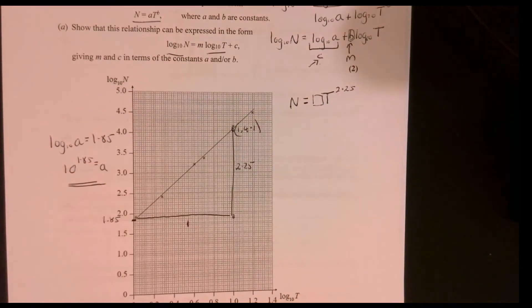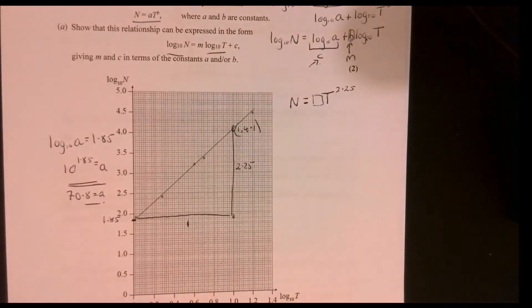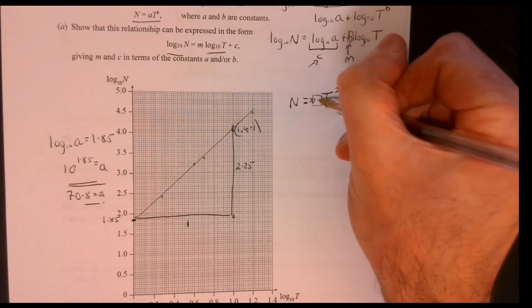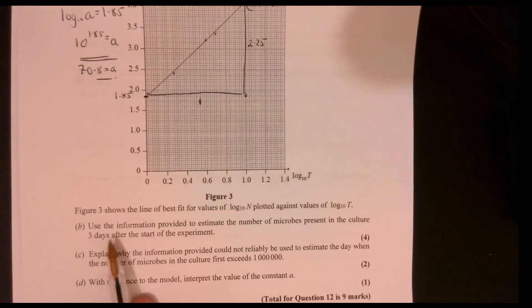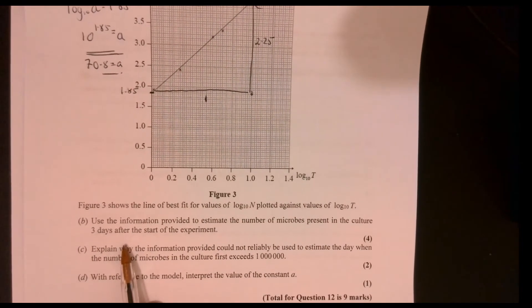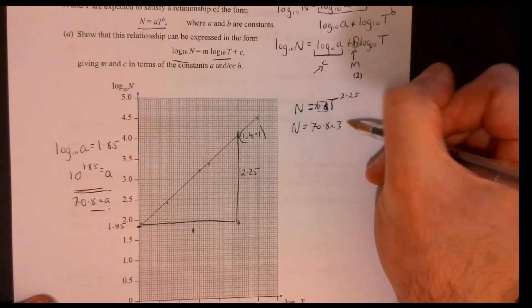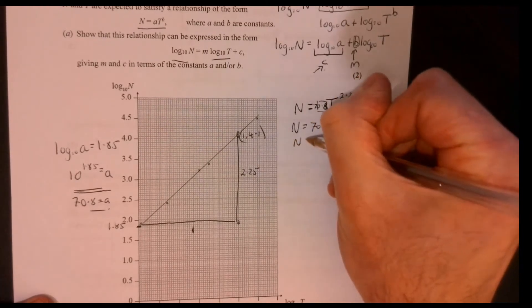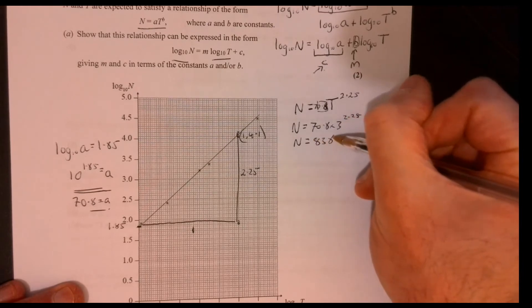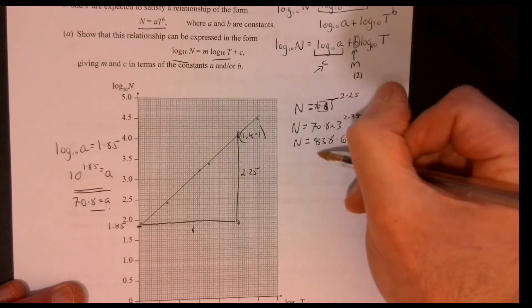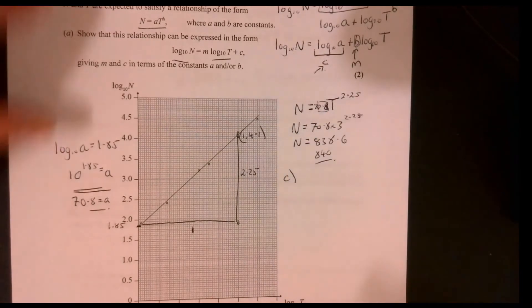this is 10 to the power of 1.85 equals A. Just remember your basic logs. A is, if you work that out, 70.8. So that comes in here. Now, what was the question? The question was to estimate the number of microbes present in the culture at 3 days. That just means substitute T equals 3. N equals 70.8 times 3 to the 2.25. If you work that out on your calculator, it comes to 838.6. Maybe two significant figures, 840. You'll be given a little bit of leeway on that. There will be a range that would be acceptable.